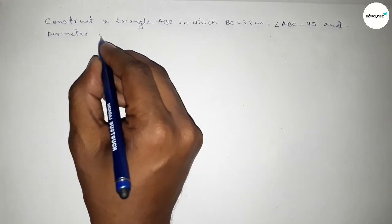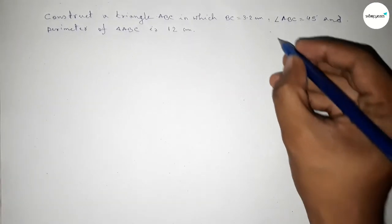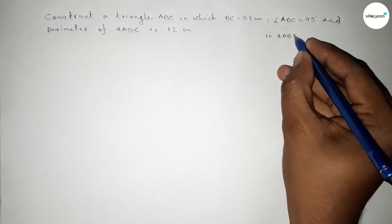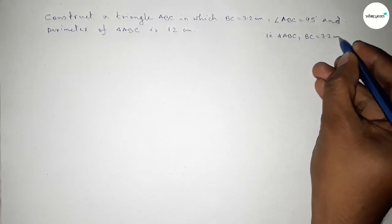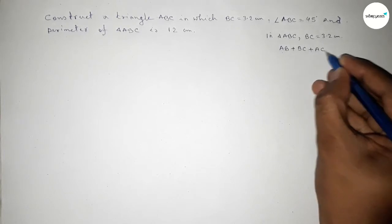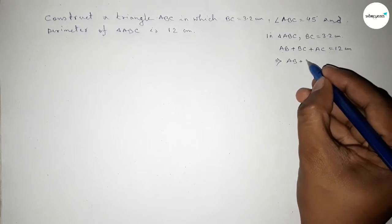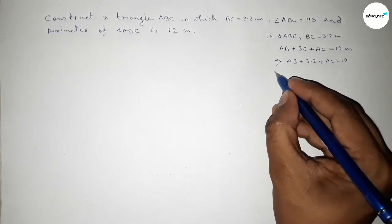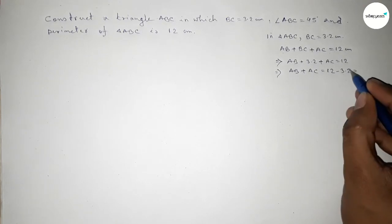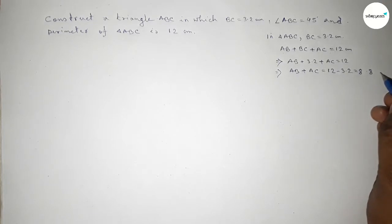Constructing this triangle using a compass. First, in triangle ABC, given BC equals 3.2 centimeters and the perimeter equals 12 centimeters. So we can write AB plus BC plus AC equals 12 centimeters. Substituting BC as 3.2, we get AB plus AC equals 12 minus 3.2, which is 8.8 centimeters.